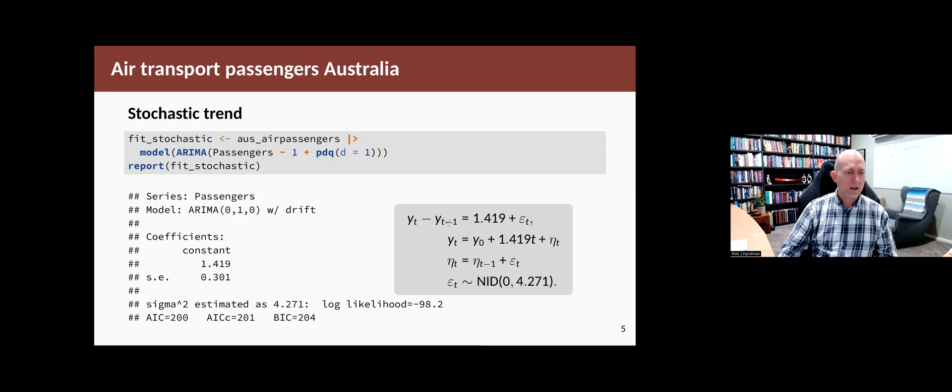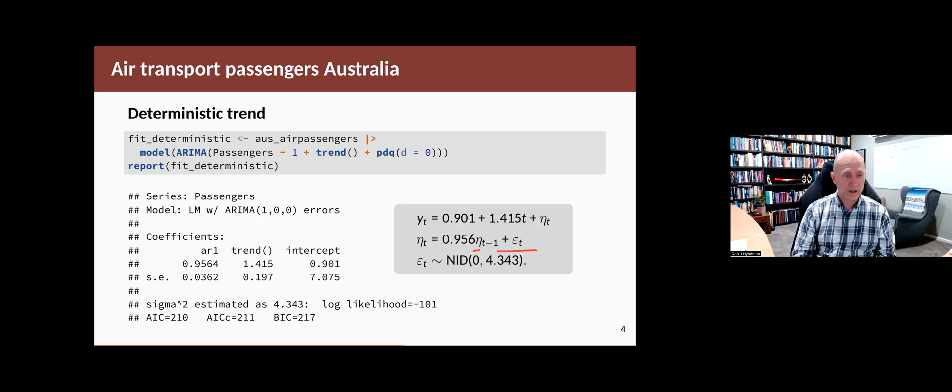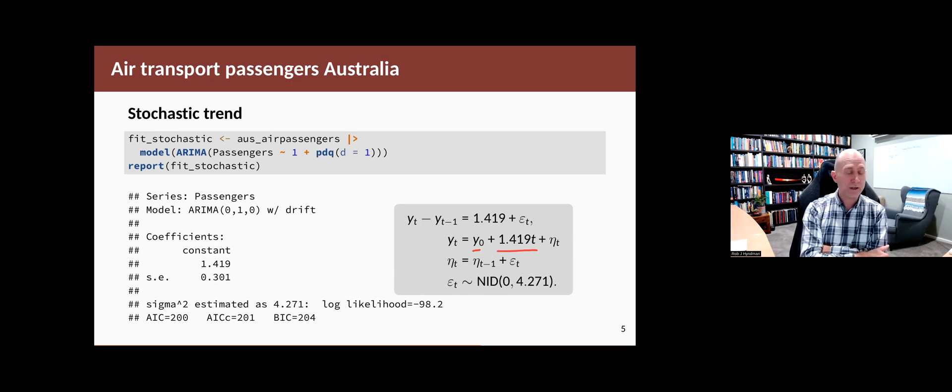If we expand that and iterate, we get that yt equals some starting point plus 0.1419 times t. So that's where the trend comes in. And it's a pretty similar trend to what we had back here, 0.1415. Now it's 0.1419. So the slope is almost the same, but it's a very different model because it has non-stationary errors. And the error term is simply a random walk like that.